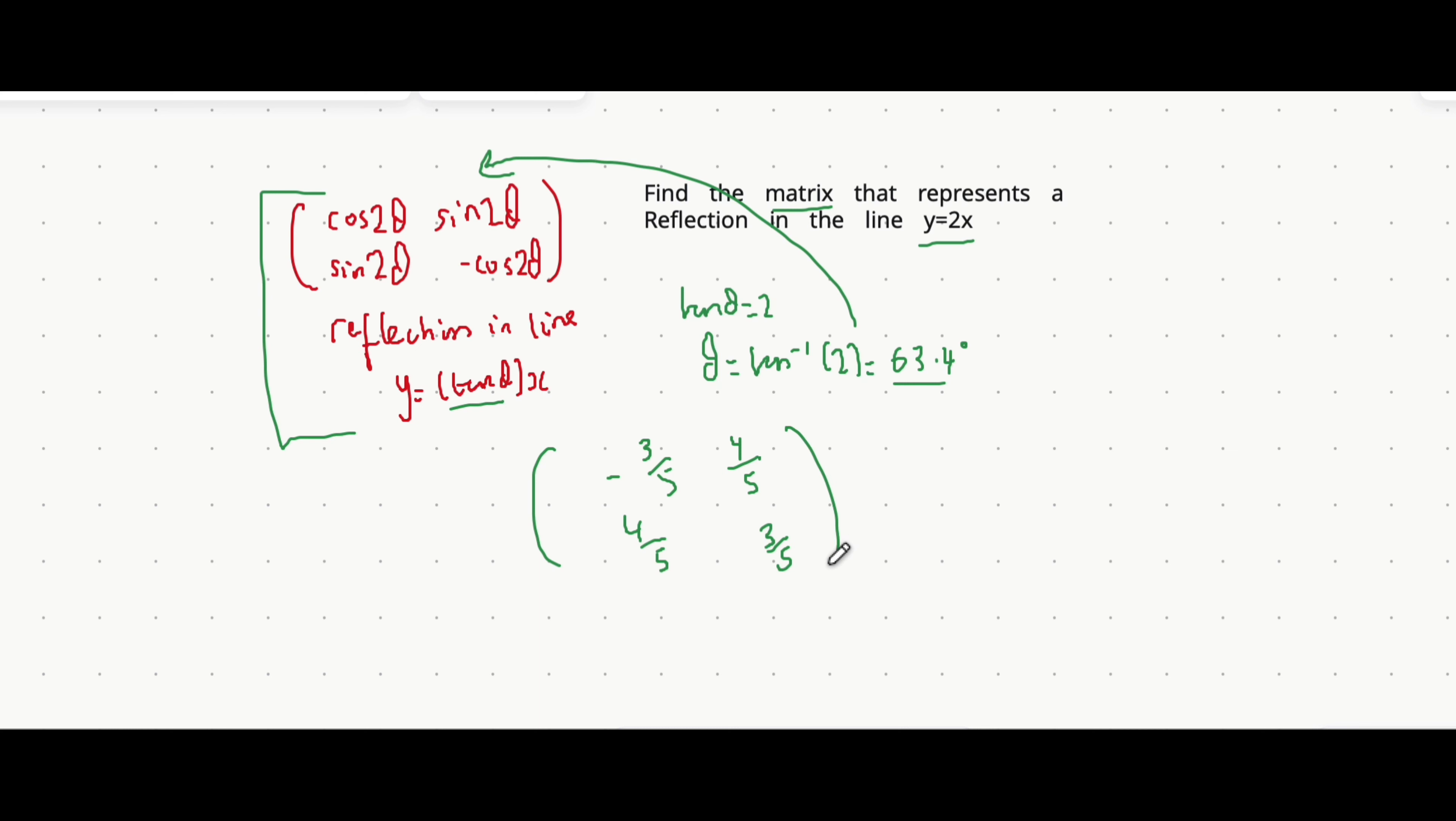So essentially, if you apply this matrix to another term in your plane, then that would represent a reflection of that matrix that you applied it to in the line y equals 2x.